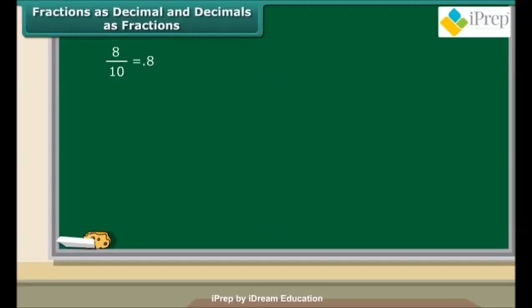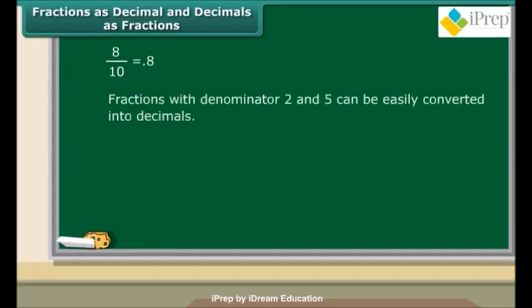We know that a fraction with denominator 10 can be represented using decimals. Now let us learn to convert fractions with denominator 2 or 5 into decimals. Take the example of 12 upon 5. First, convert the denominator of the fraction into 10 in order to know how many tenths are involved.